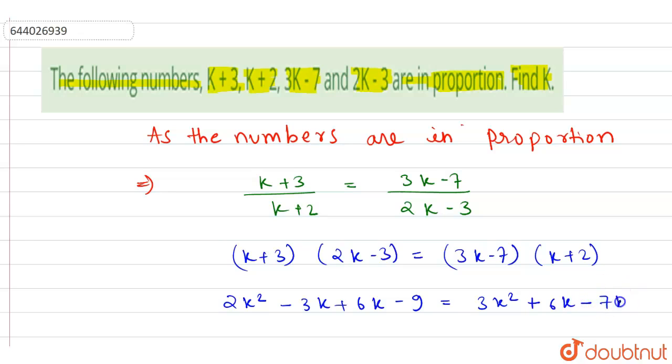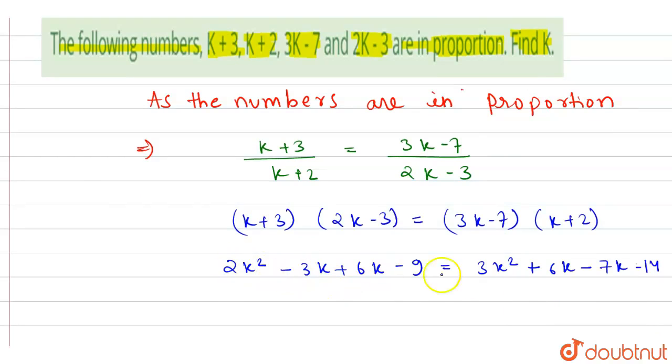Here, as we see, 6K and 6K will get cancelled. So if we take all the terms on the same side...